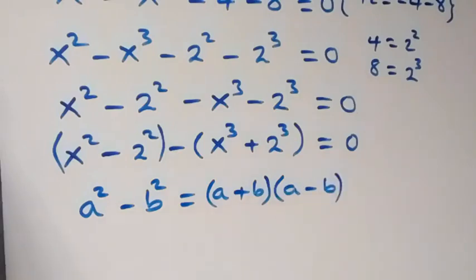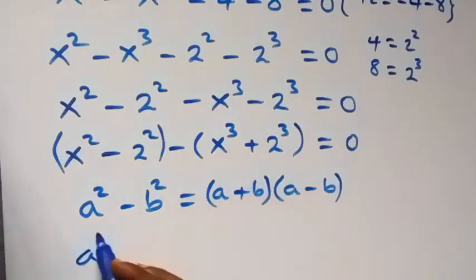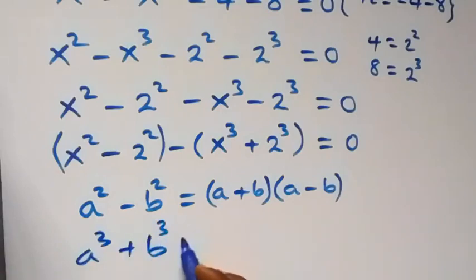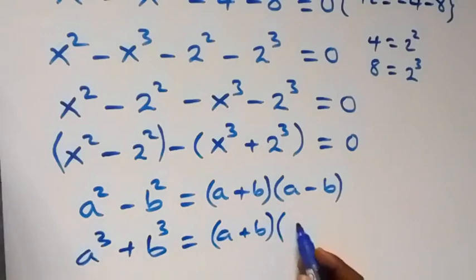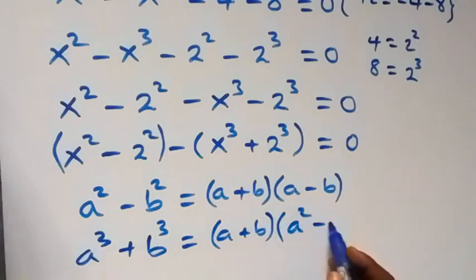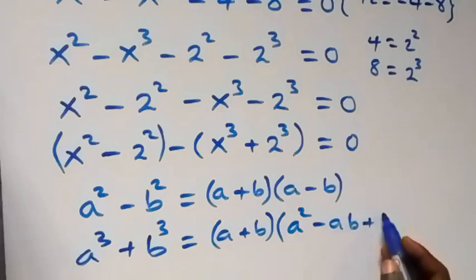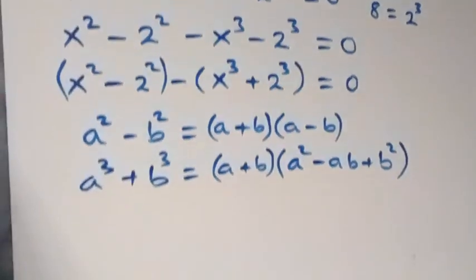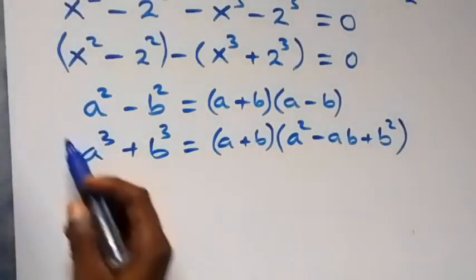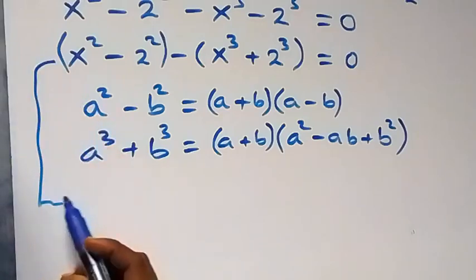And also here we use the sum of two cubes: a cubed plus b cubed equals (a plus b) multiplied by (a squared minus ab plus b squared). Then from what we have here we can apply it to this equation.